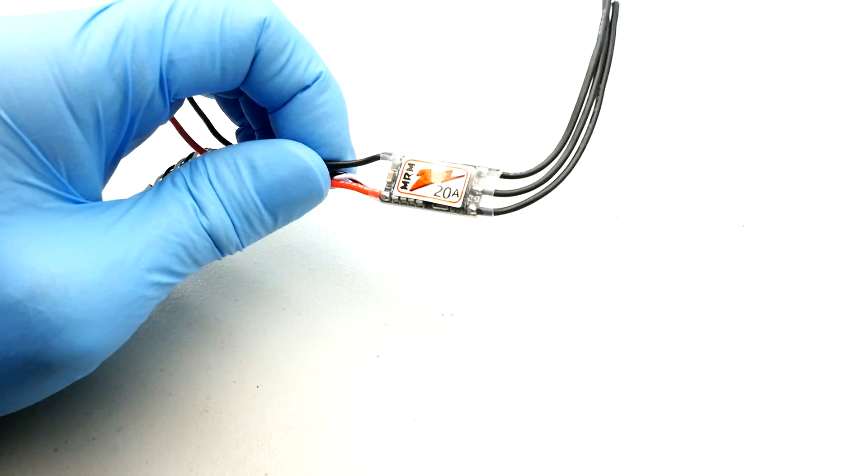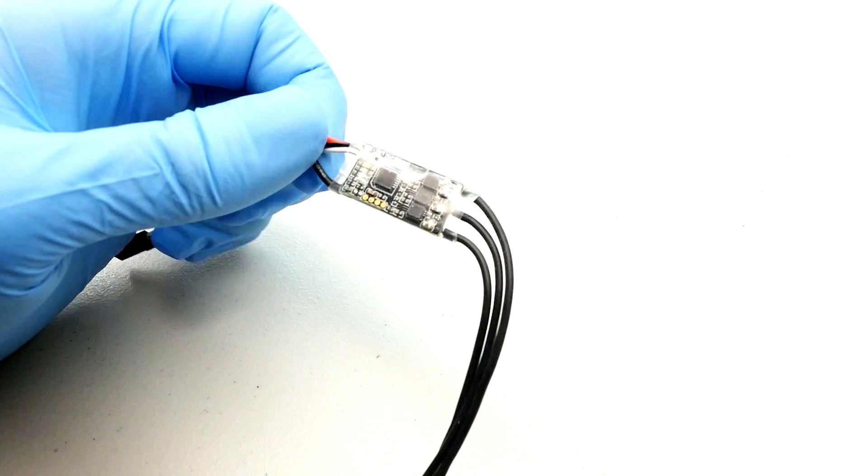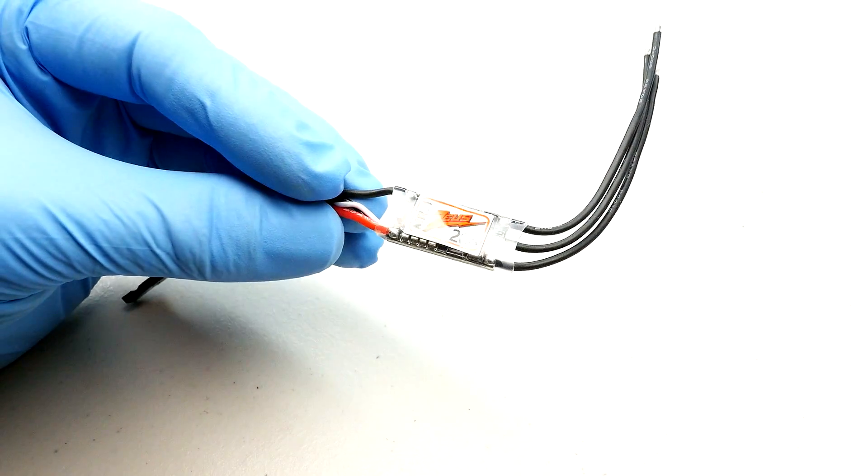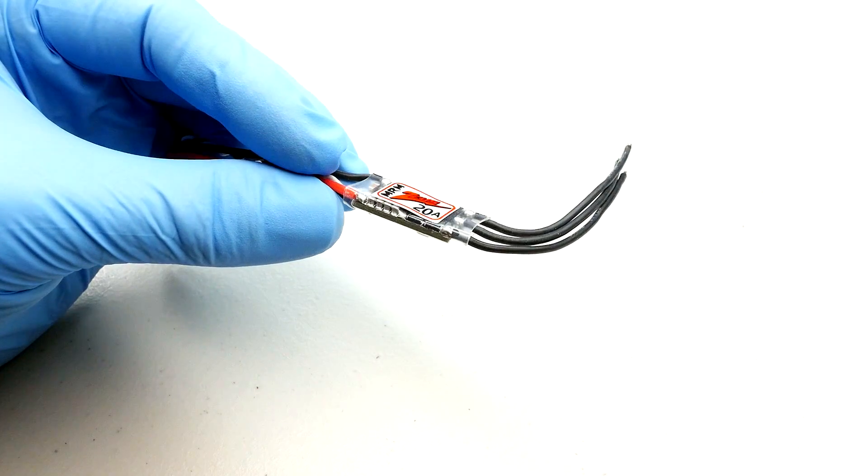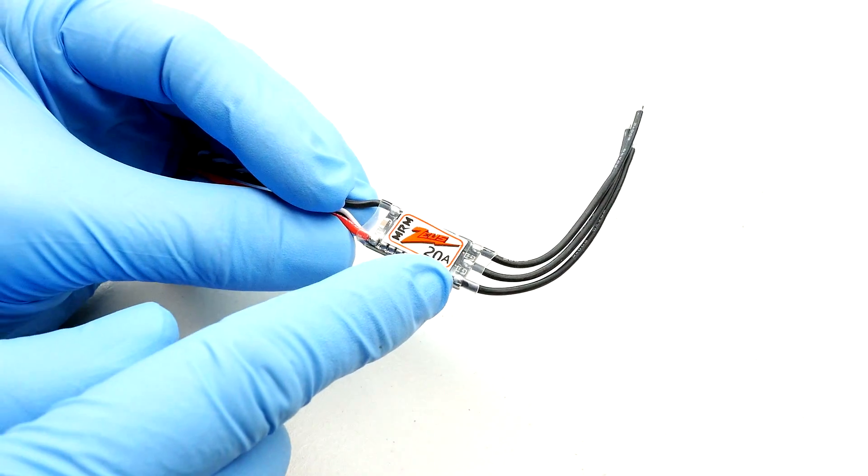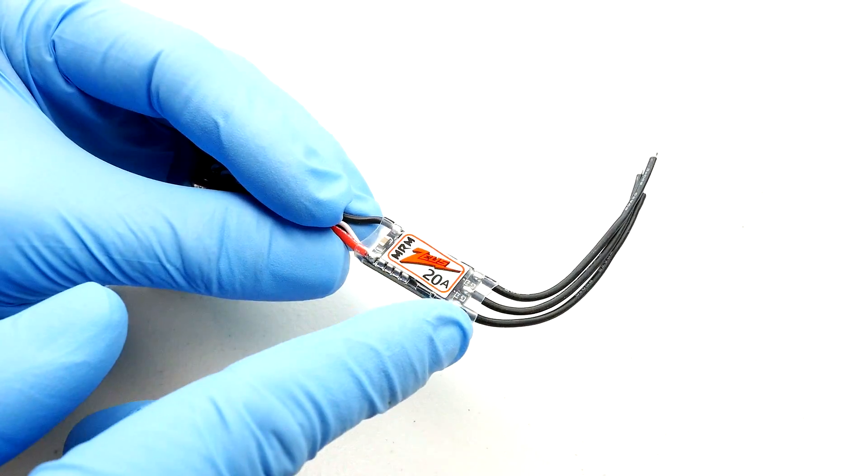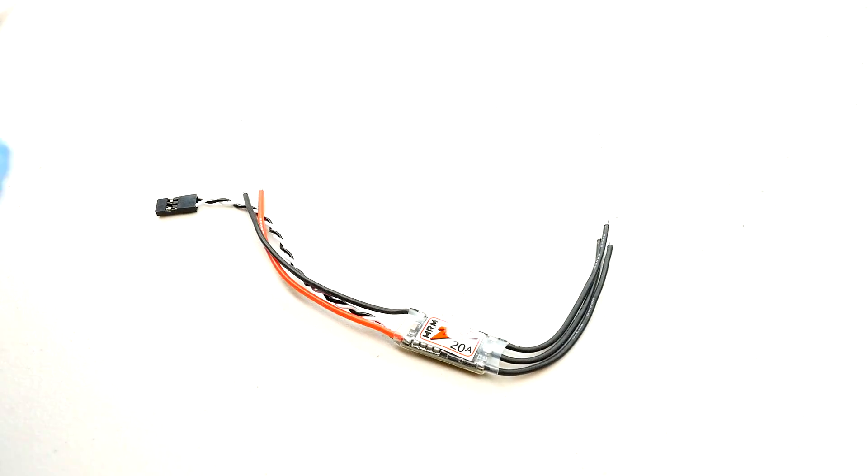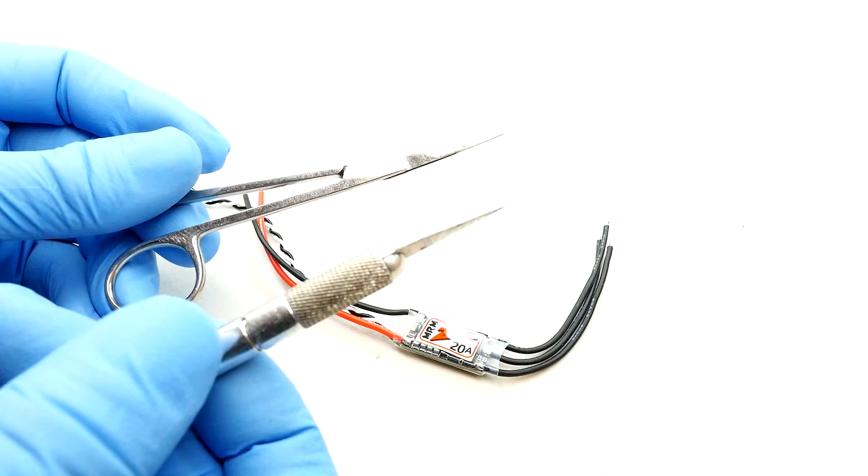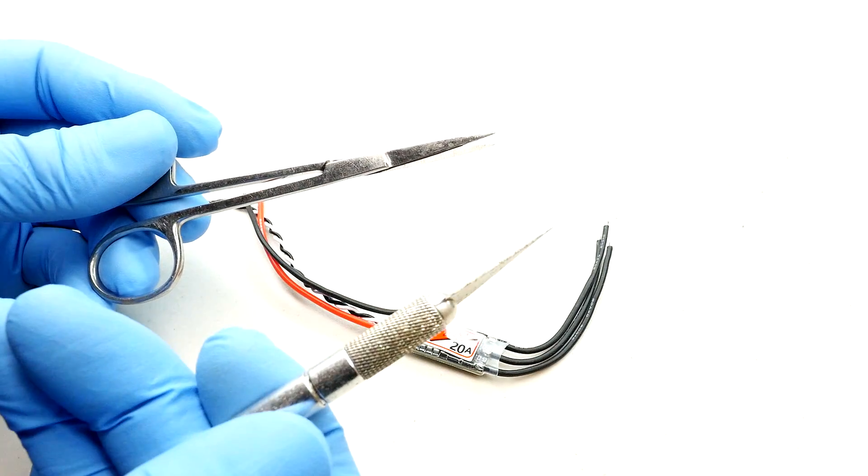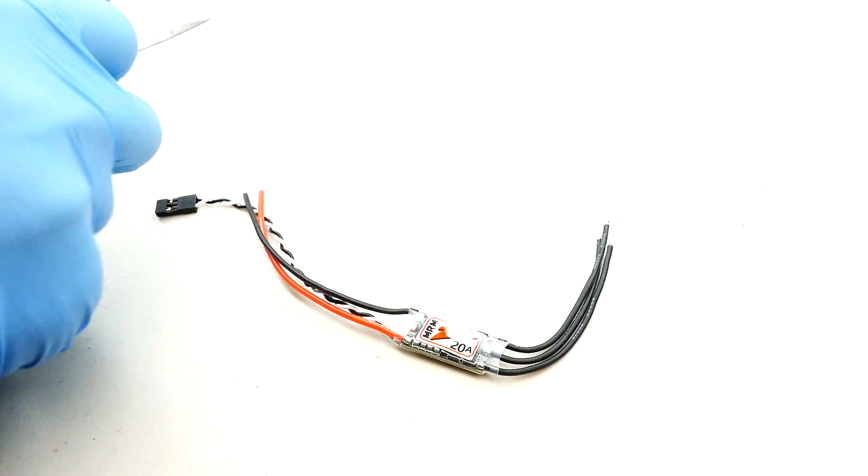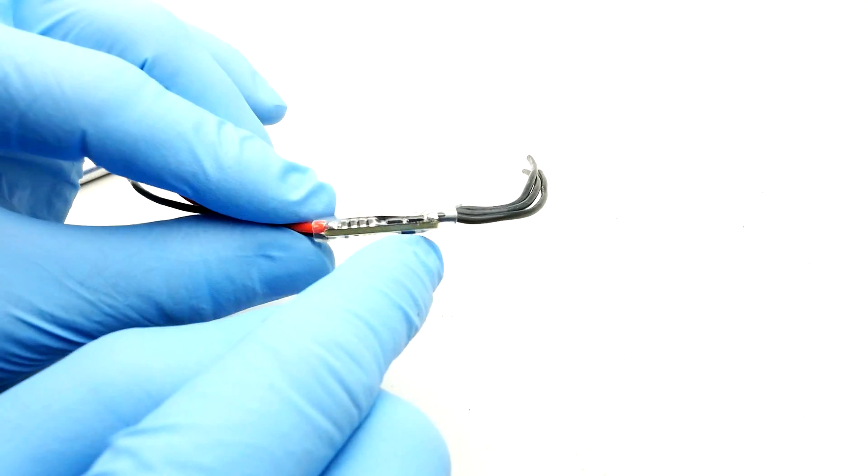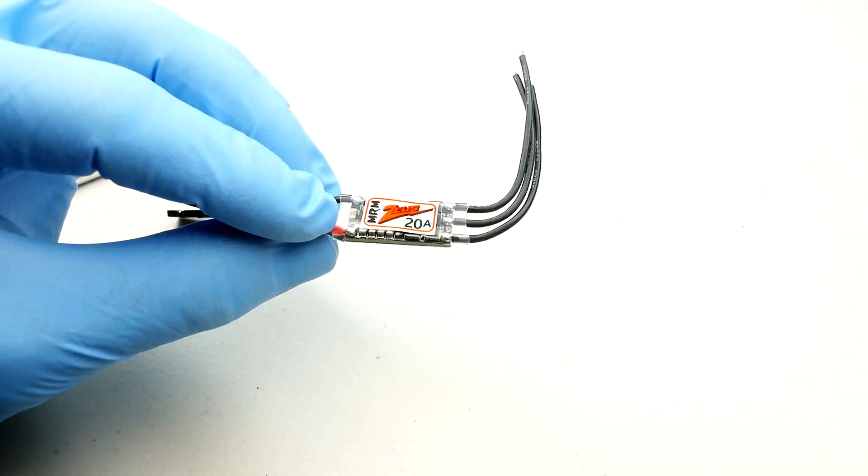Alright so the first step is take the ESC, pick it up, turn it around, revel in how awesome this thing is. After you're done, you want to remove this clear shrink tubing. So you can do that with some scissors. Make sure they're pretty sharp, an exacto knife, something of that nature and when you're cutting it, be sure not to obviously damage the ESC and get this off of here.